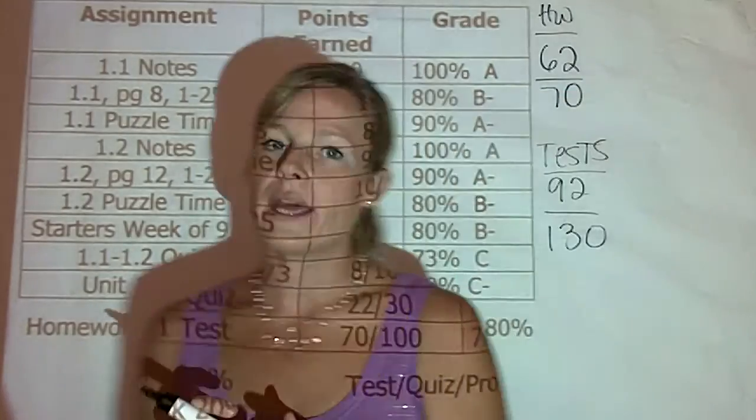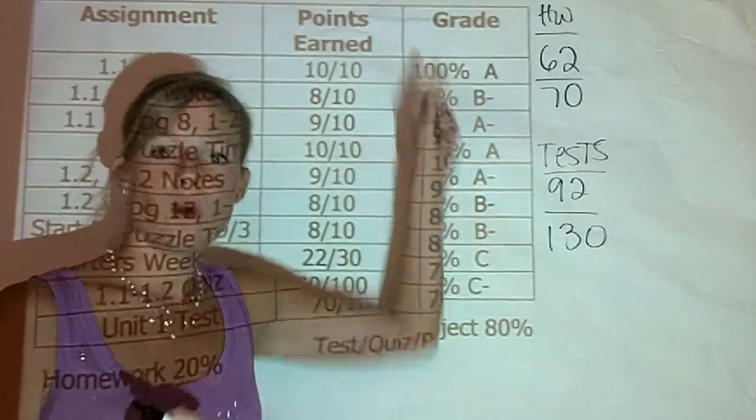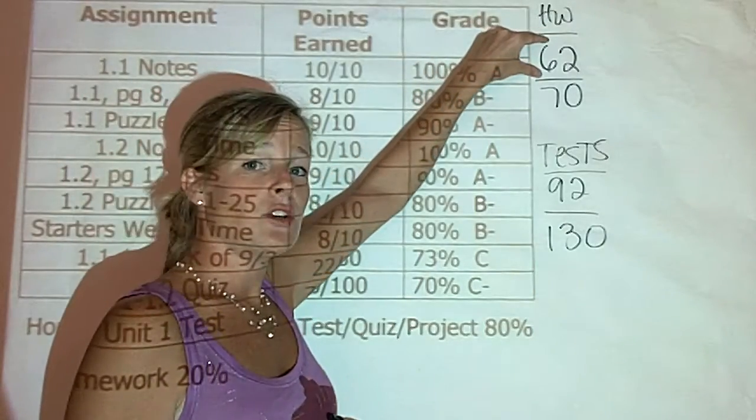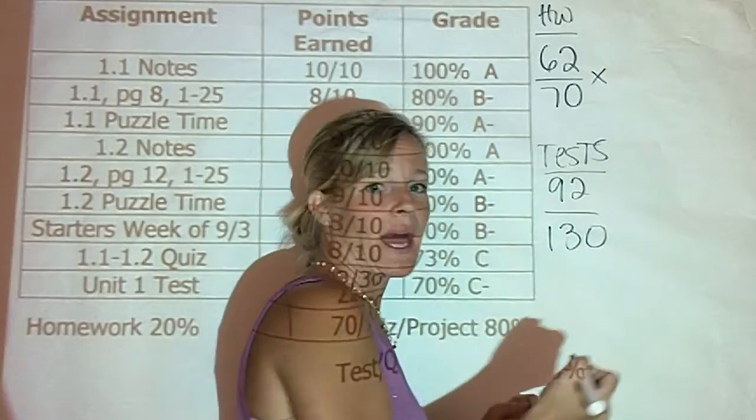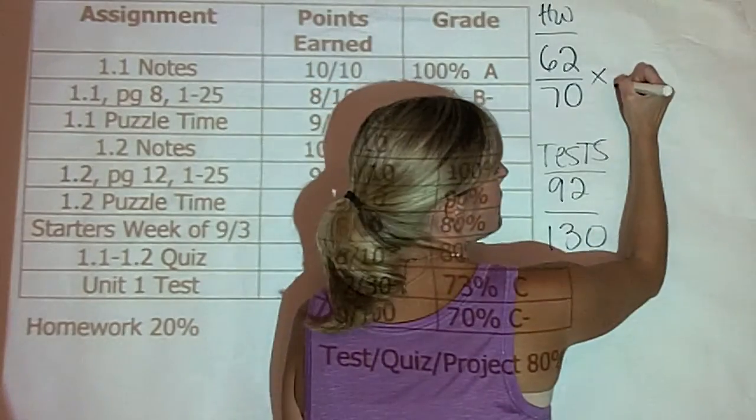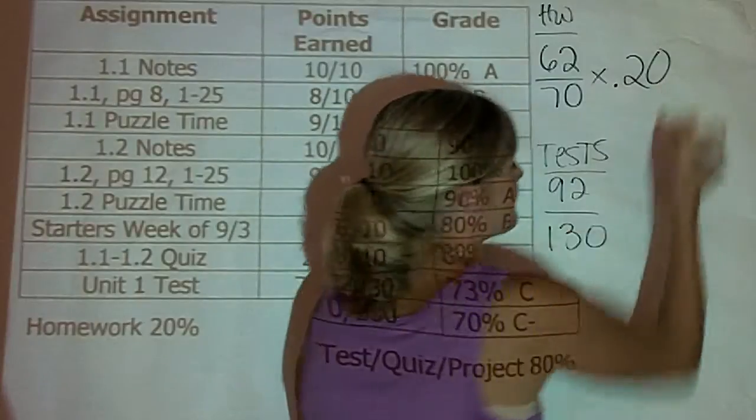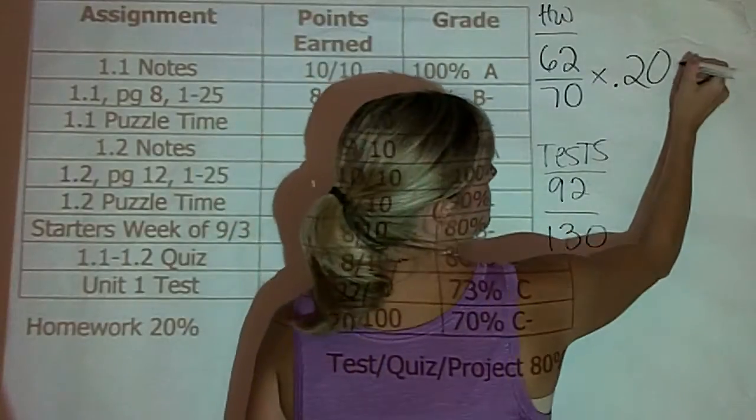Now, at this point, because homework is worth 20% of their grade, you would take 62 divided by 70 and multiply that by 20% or .2, .20. Same thing.